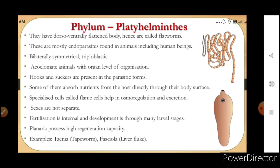Sexes are not separate, meaning they are bisexual animals. Fertilization is internal and development is through many larval stages, meaning it is indirect development. Planaria in this group has high regeneration capacity. The mode of reproduction in planaria is fragmentation or regeneration — when the body is divided, each half can give rise to the whole body.